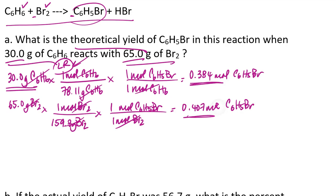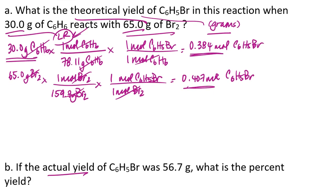Since I'm asked for a theoretical yield, in this case that would be the mass in grams of the product that I would form if this reaction went perfectly, then what I can do is starting from the 0.384 moles of the bromobenzene, I can convert that to grams using the molar mass of bromobenzene. So I'm going to go from moles of bromobenzene to grams of bromobenzene. That molar mass is 157.0.